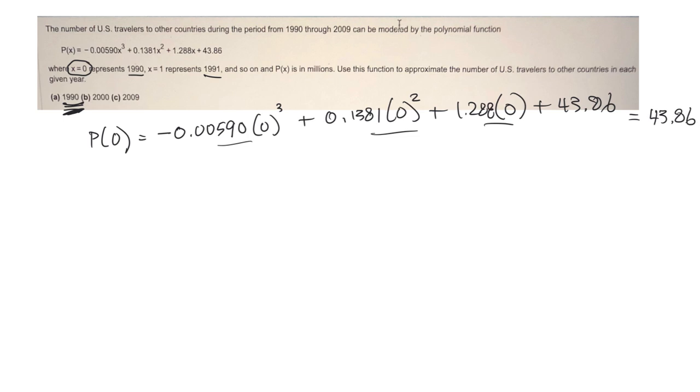Then what I can do is now they say, well, how about in the year 2000? Well, that'll be 10 years, so they want to figure out what the P of 10 is. So then what I do is I plug a 10 in everywhere there's an x and see what my answer comes out to.